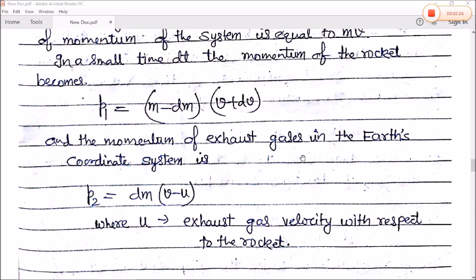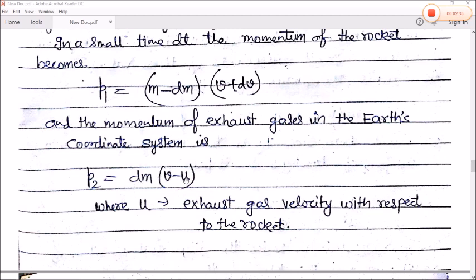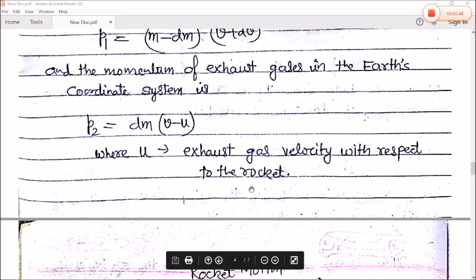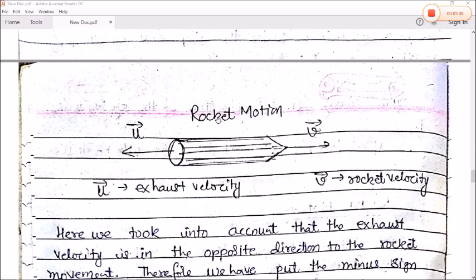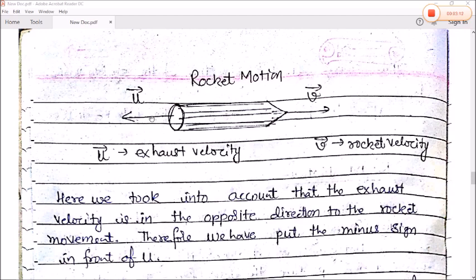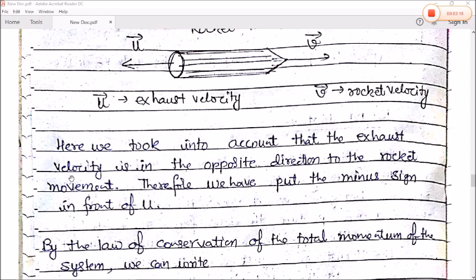And the momentum of the exhaust gas in the Earth coordinate system, P2 is equal to dm times (v minus u). Here we took into account that the exhaust velocity is in the opposite direction to the rocket movement, therefore we put the minus sign in front of u.